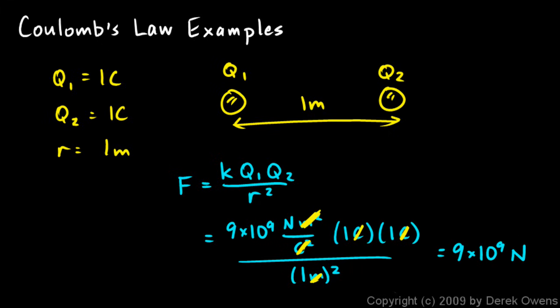That's nine billion Newtons, and that's a lot of force. What this example basically shows you is that one Coulomb is an unrealistically large amount of charge. We don't typically find one Coulomb static charges sitting on things, and you can see why. One Coulomb exerts a huge amount of force on another one Coulomb charge—the force is nine billion Newtons.